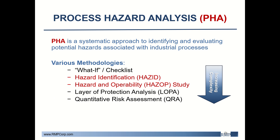Diving right in — a PHA is a systematic approach to identifying and evaluating different hazards and risks associated with an industrial process. There are different methodologies to employ; I've listed five of the most common ones here, though there are even more. Today I'll be focusing on HAZID and HAZOP, which are two qualitative approaches, as opposed to more complex quantitative approaches like LOPA and QRA.